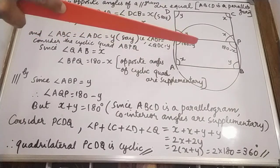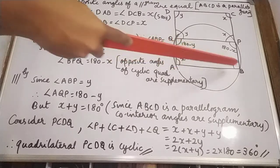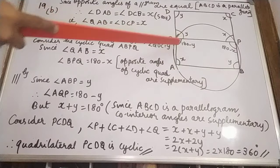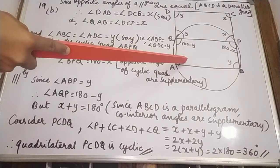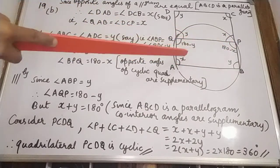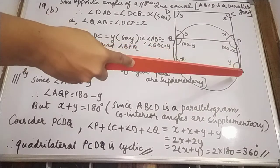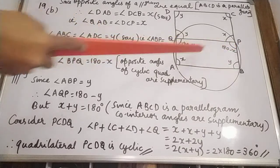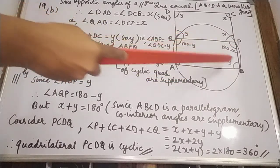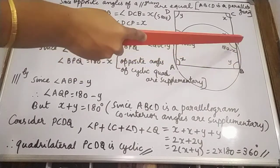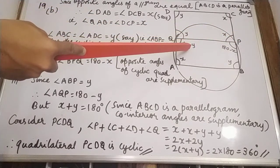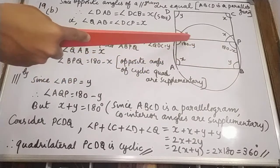Now consider cyclic quadrilateral ABPQ. We know angle QAB equals X. Since opposite angles of a cyclic quadrilateral are supplementary, angle BPQ equals 180 minus X. Similarly, angle AQP equals 180 minus Y, by the same concept.